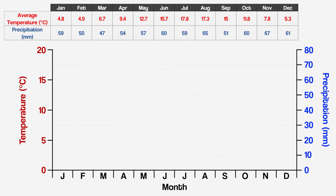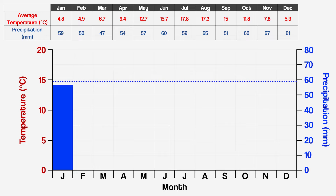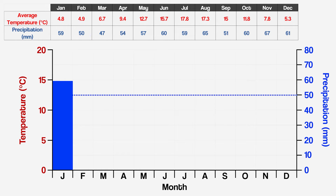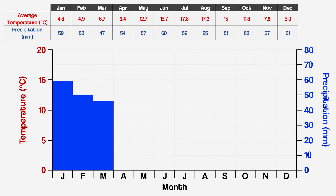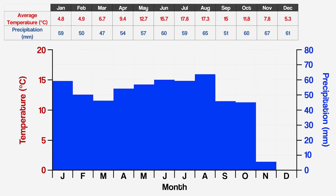It's time we put our data on this graph, starting with precipitation. This is always shown using bars and those bars are often, though not always, blue. So January had 59 millimetres of precipitation, and we need that to match the correct y-axis. Then we add our bar. February is 50 mil and we add another bar. March is 47 mil and so on, all the way to the end of the year.